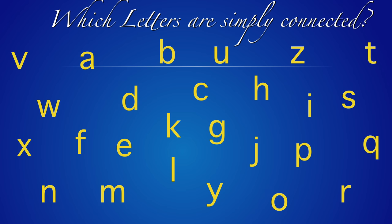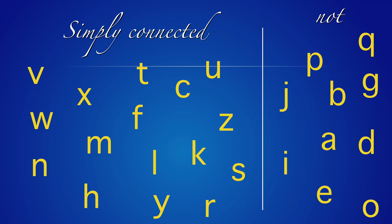Which letters are simply connected? The common assumption is that simply connectedness assumes connectedness. So the letters i and j are not connected, and they are also considered not simply connected. But which of the remaining letters are simply connected? Here we see the answer — there are eight which have a hole somewhere which cannot be pulled together to a point.